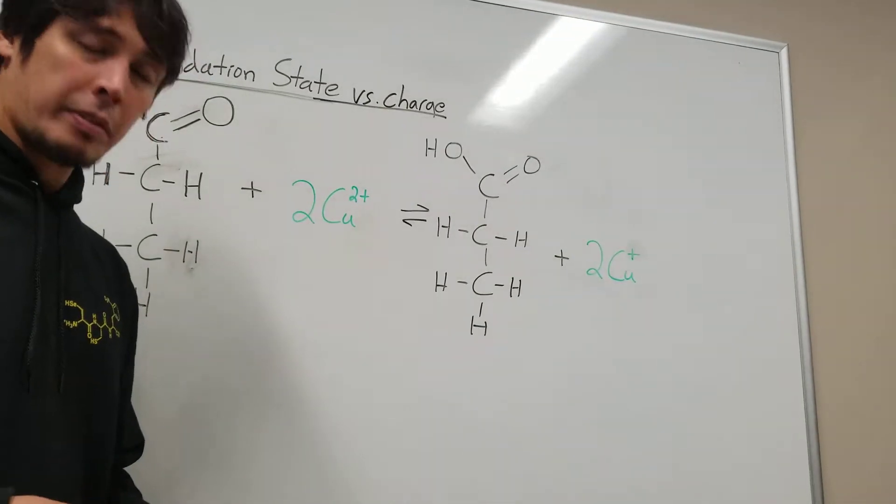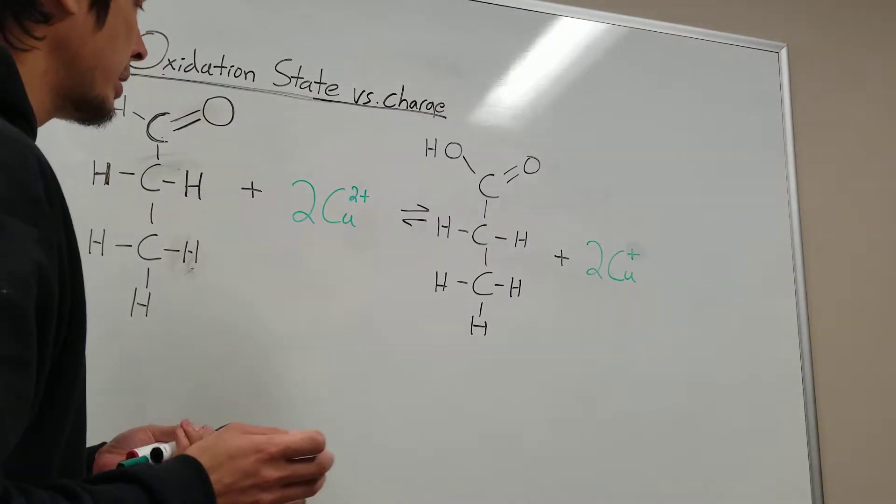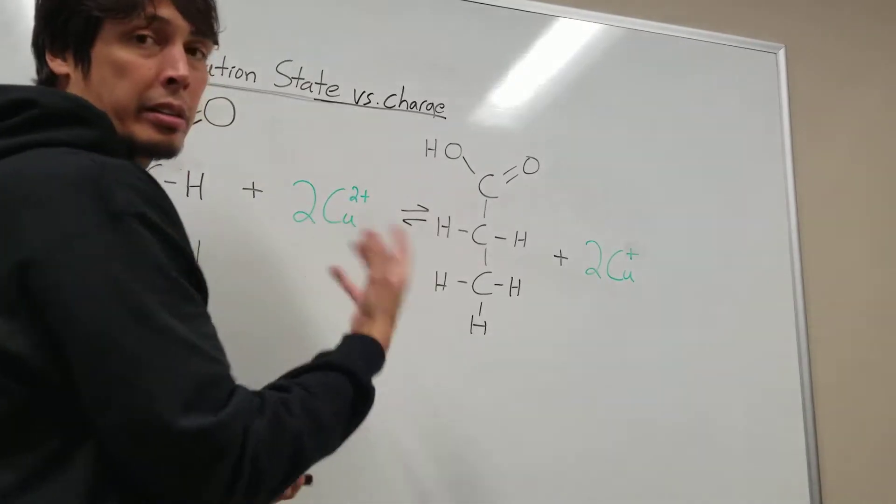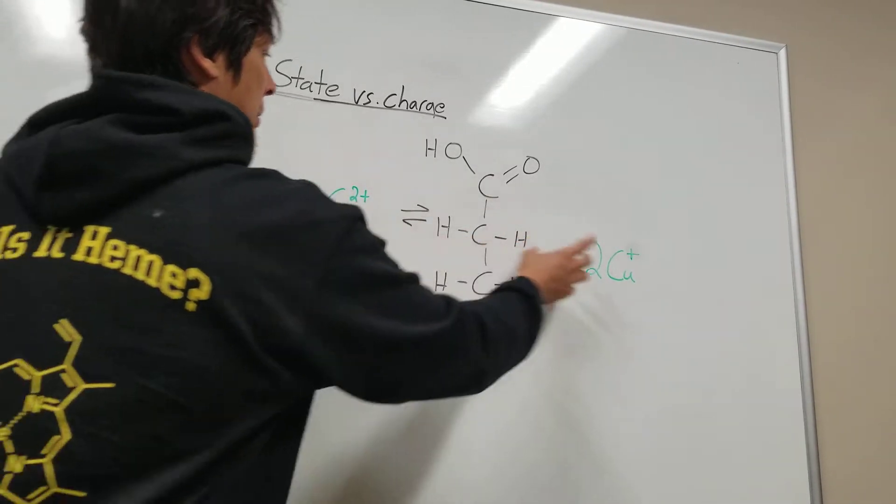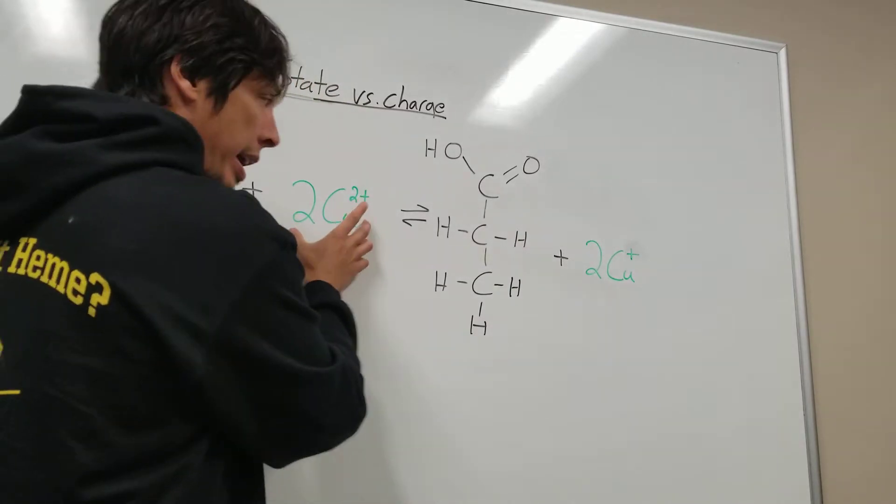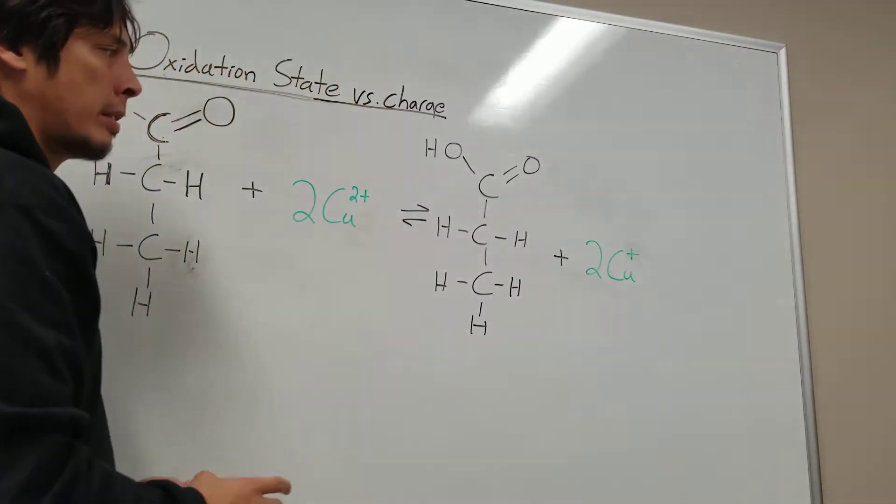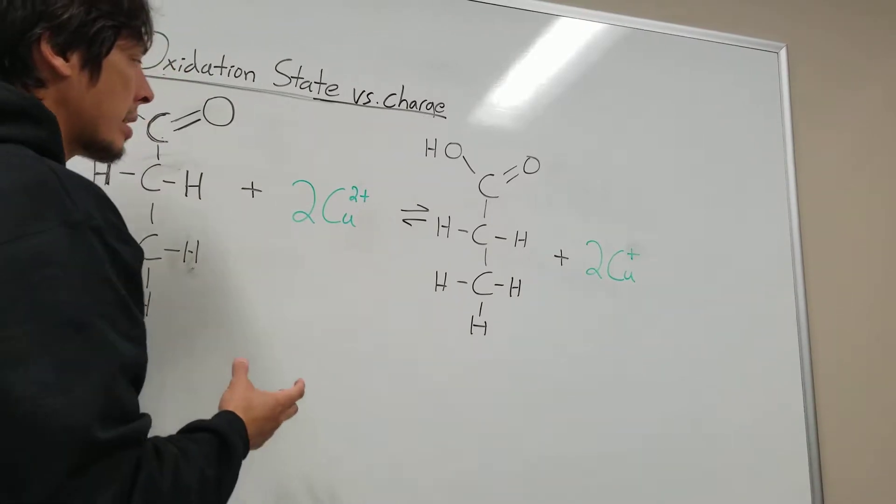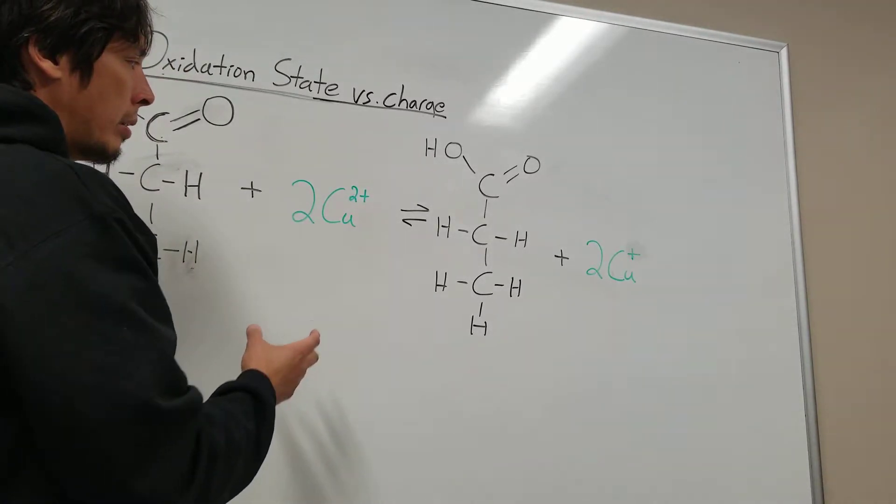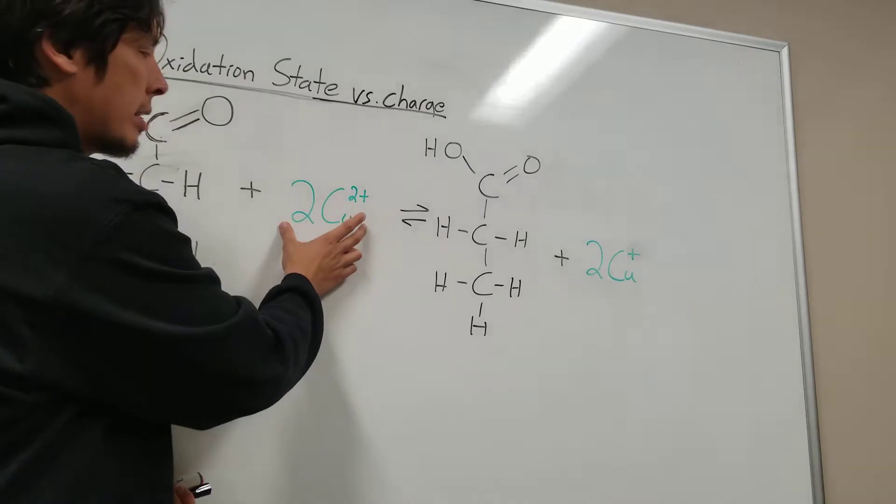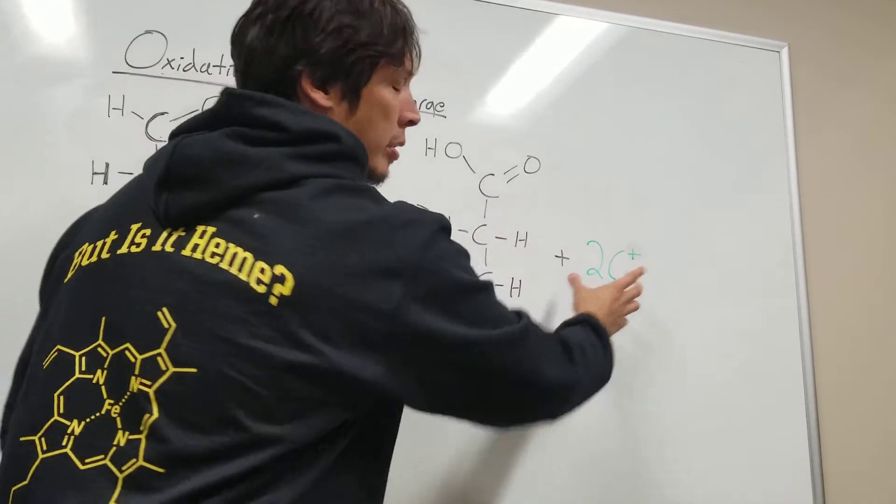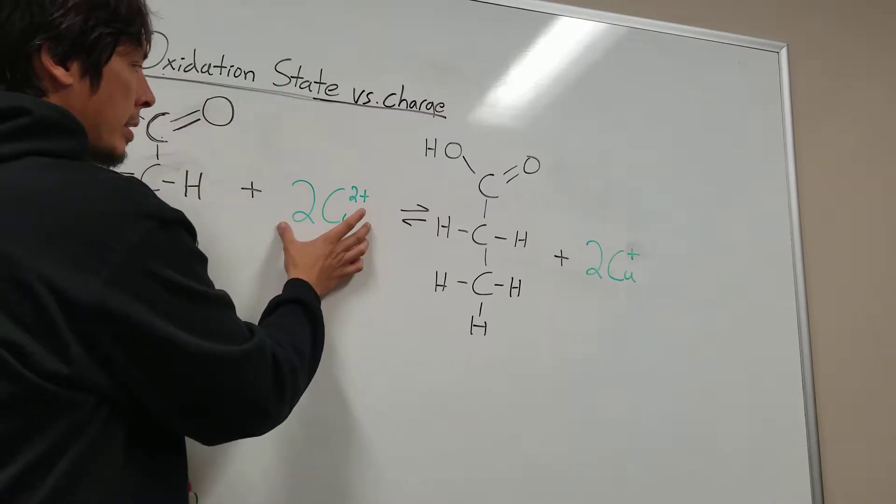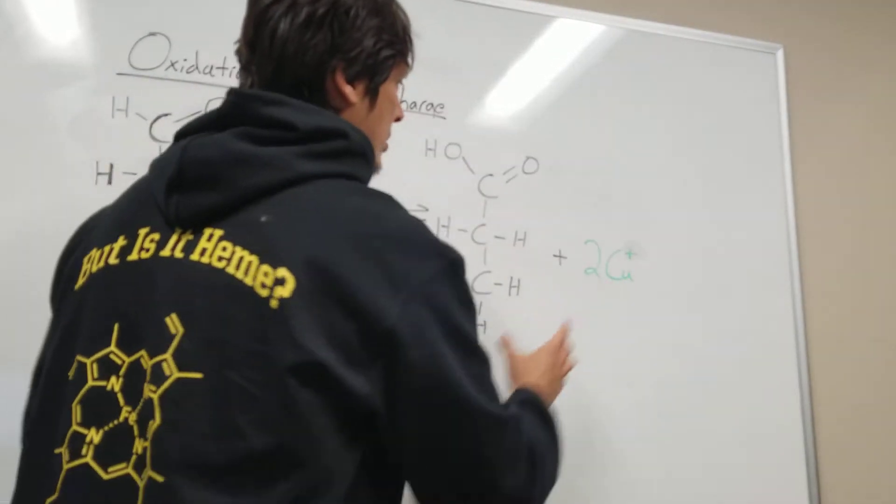As we've seen in the last couple of videos, it's pretty easy to determine by looking at the charge state of the metal ion in the reactant versus the product what the oxidation state of the metal is. In this case on the reactant side, it's copper 2 and copper 1 over here. So we have a reduction of copper 2 to copper 1.